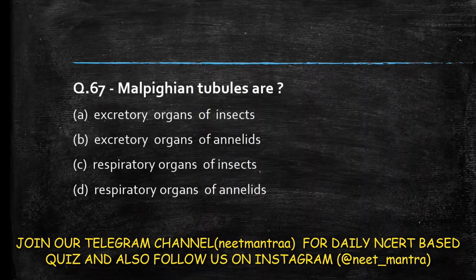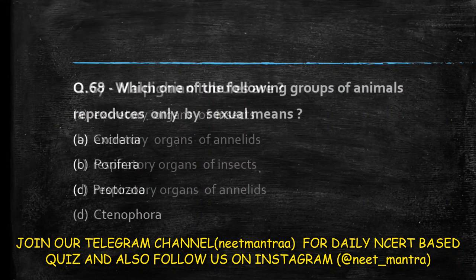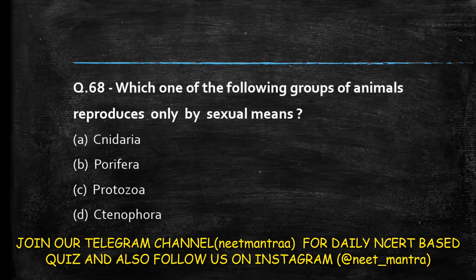Next question: Malpighian tubules are — excretory organ of insects; excretory organ of annelids; respiratory organ of insects; respiratory organ of annelids? Malpighian tubules are excretory organs, and they are found in insects. So the answer is option A.